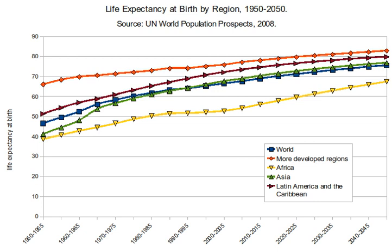Another measure, such as life expectancy at age 5, can be used to exclude the effect of infant mortality to provide a simple measure of overall mortality rates other than in early childhood. In the hypothetical population above, life expectancy at 5 would be another 65. Aggregate population measures, such as the proportion of the population in various age groups, should also be used along with individual-based measures like formal life expectancy when analyzing population structure and dynamics.